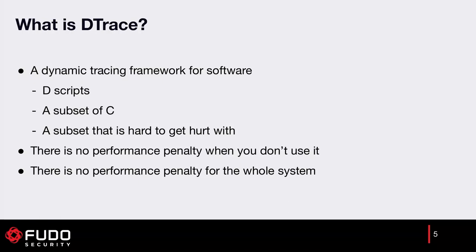DTrace is a dynamic tracing framework. We can trace our program without recompiling it, without adding any additional probes. We can just trace it and add probes wherever we want. We program DTrace using DScript, which is a very simple language — a subset of C language. Some people say it's also inspired by AWK. The subset is designed so you cannot hurt yourself; for example, you will not find loops in DTrace because you could loop your kernel indefinitely.